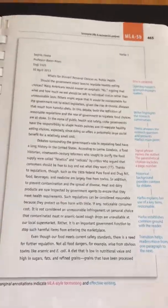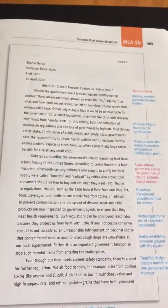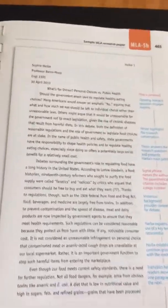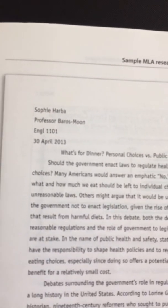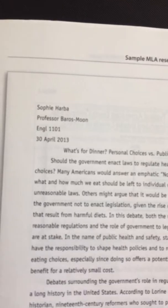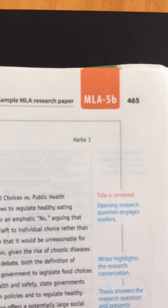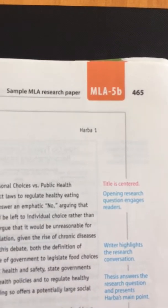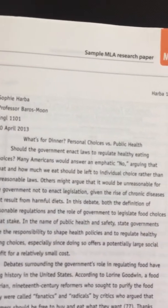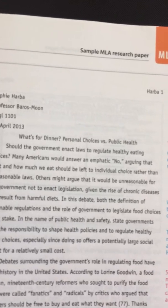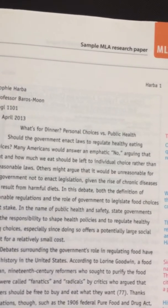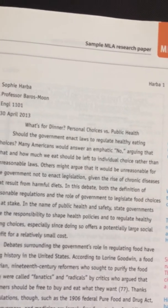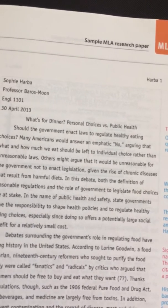I wanted to point out some things here to you. You're going to set this paper up just like I showed you with the annotated bibliography. You're going to have your student name, my name, the class, and the date. You're also going to put in your last name and page number, just like the annotated bibliography. You're going to center your title right after the header information. This is all double spaced, and for this class I want you to set it up in Times New Roman 12 point font.